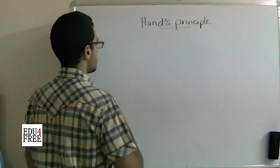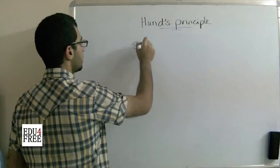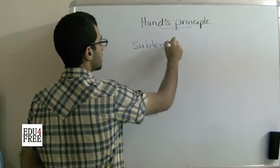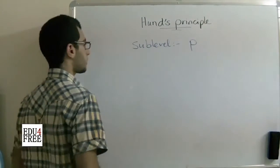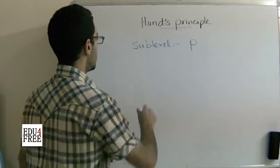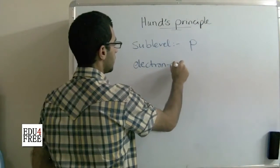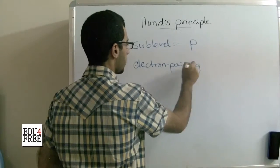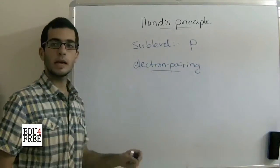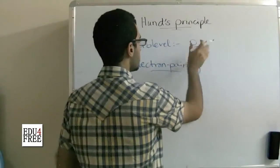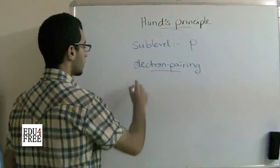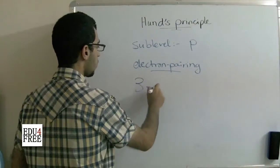This means that if we have a sub-level, say P, and electron pairing means having two electrons. We know that P contains three orbitals,